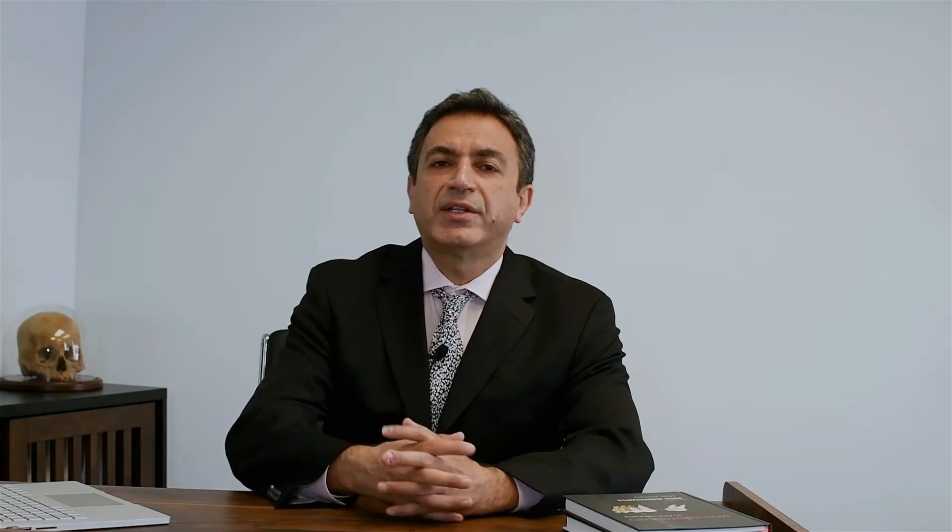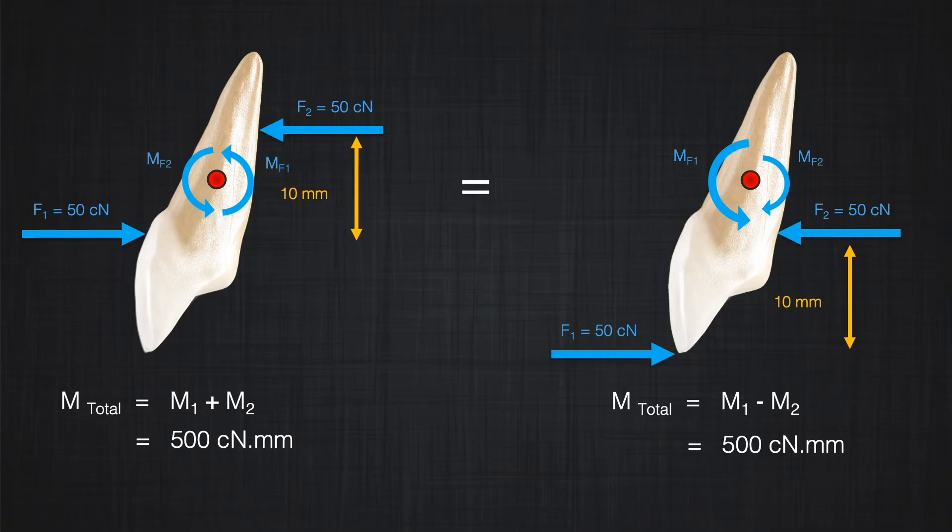It seems that regardless of where you apply the couple, the point of application is not important. As long as the forces stay the same and the distance between the forces stays the same, the magnitude of the moment in the system stays the same. This has significant clinical application because many times we cannot apply our couple in the place we like — it gives us the freedom to apply the couple anywhere and achieve the same result.